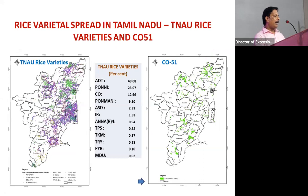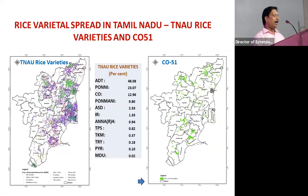We have mapped varietal spread using GIS systems — mainly the BPT variety, TNAU ADT varieties, PONI, CR1009, and the recently released Co 51 variety, assessing its spread across different villages. We generate varietal information especially targeting rice and maize crops.